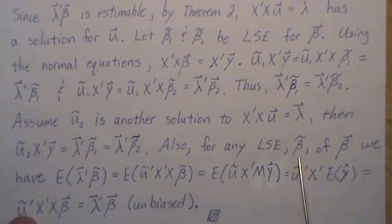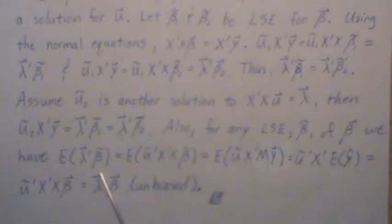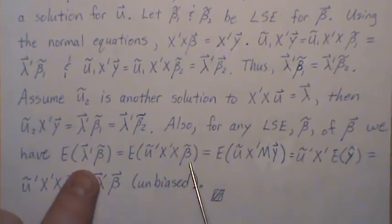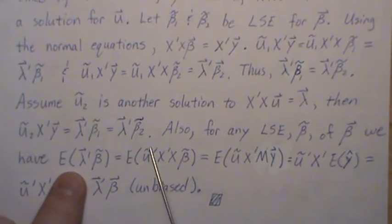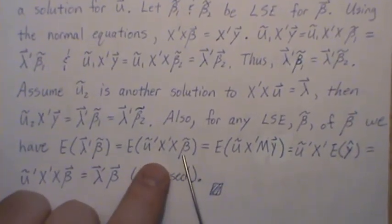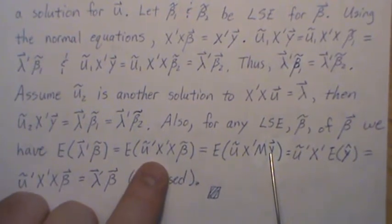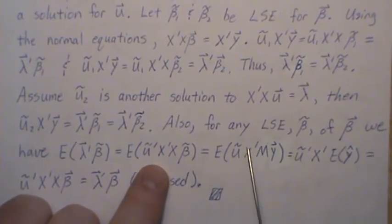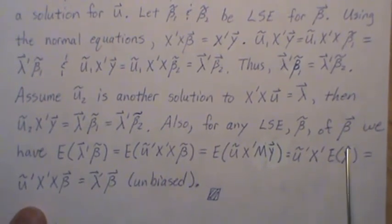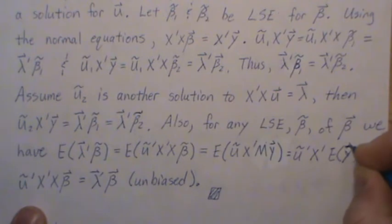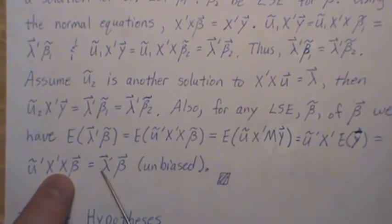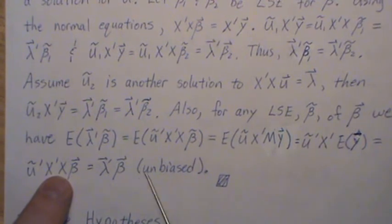For any least squares estimator beta-tilde, we also need to show unbiasedness, which requires the function to be estimable. The expected value of lambda prime beta-tilde: by Theorem 2 we substitute what lambda prime is — u prime X-transpose X — and put in the generalized-inverse expression for beta-tilde. X-transpose M is just X-transpose, and taking the expectation, the expected value of y is X beta. Then u prime X-transpose X beta equals lambda prime beta by Theorem 2, so it is unbiased and the theorem is proved.